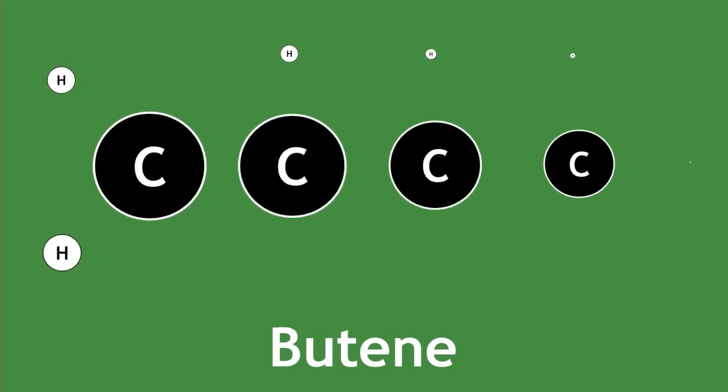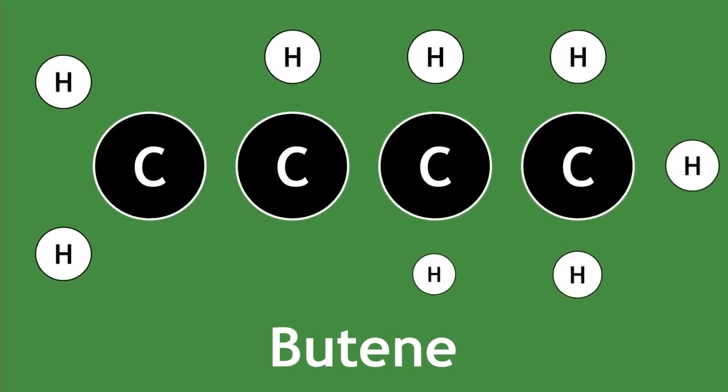Here is the molecule butene, shown in displayed formula. It shows all the atoms in the correct order with lines to represent all single and double covalent bonds.